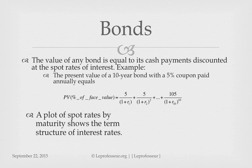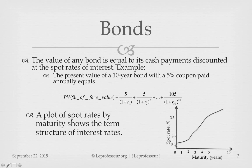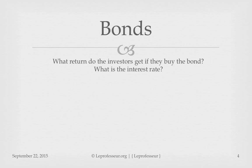A plot of spot rate versus maturity shows the term structure. Typically this plot shows that bonds maturing in 30 or 20 years will have a higher spot rate compared to bonds maturing in one or two years. But why do people buy bonds? It is simply a promise to pay back your principal. The government is going to be there, so you can assume the government will pay your principal back — but this doesn't apply to companies or municipalities, which may go bankrupt.